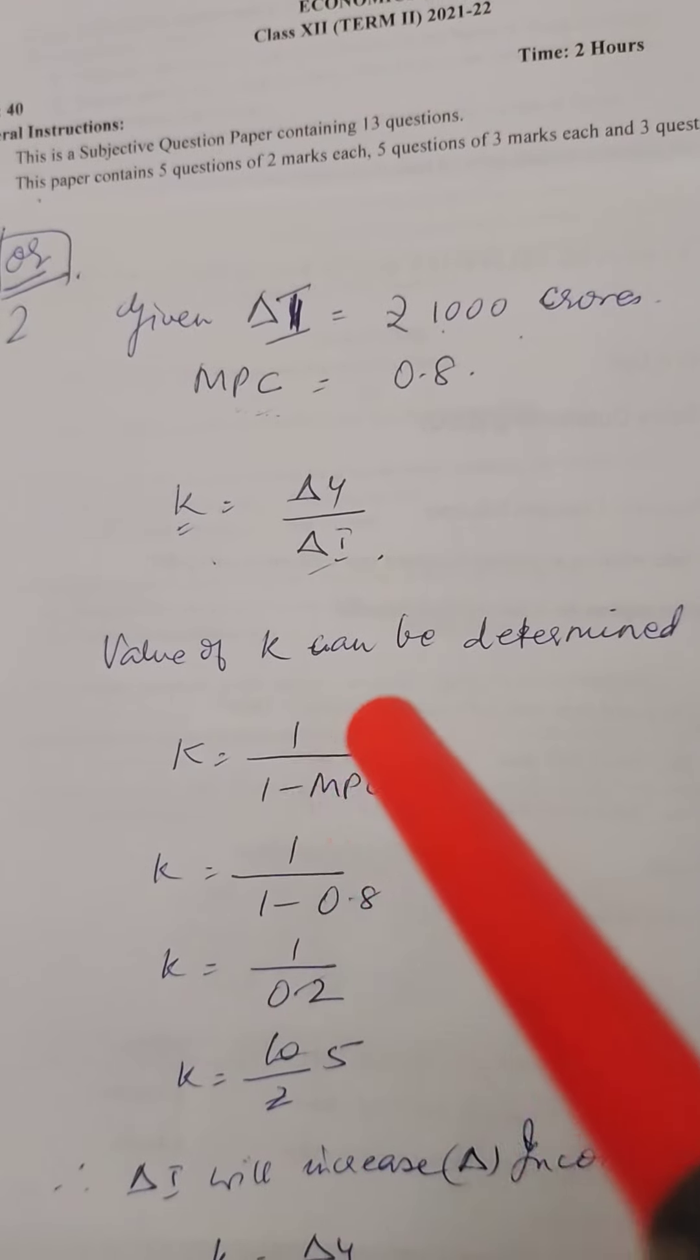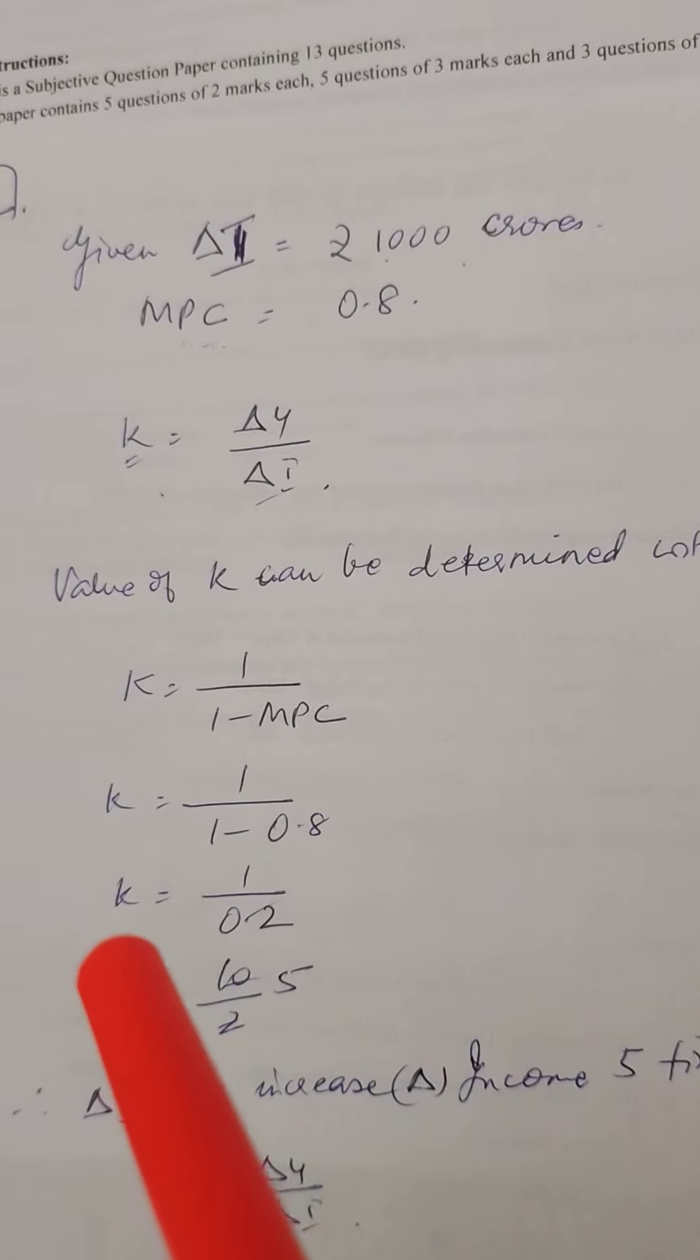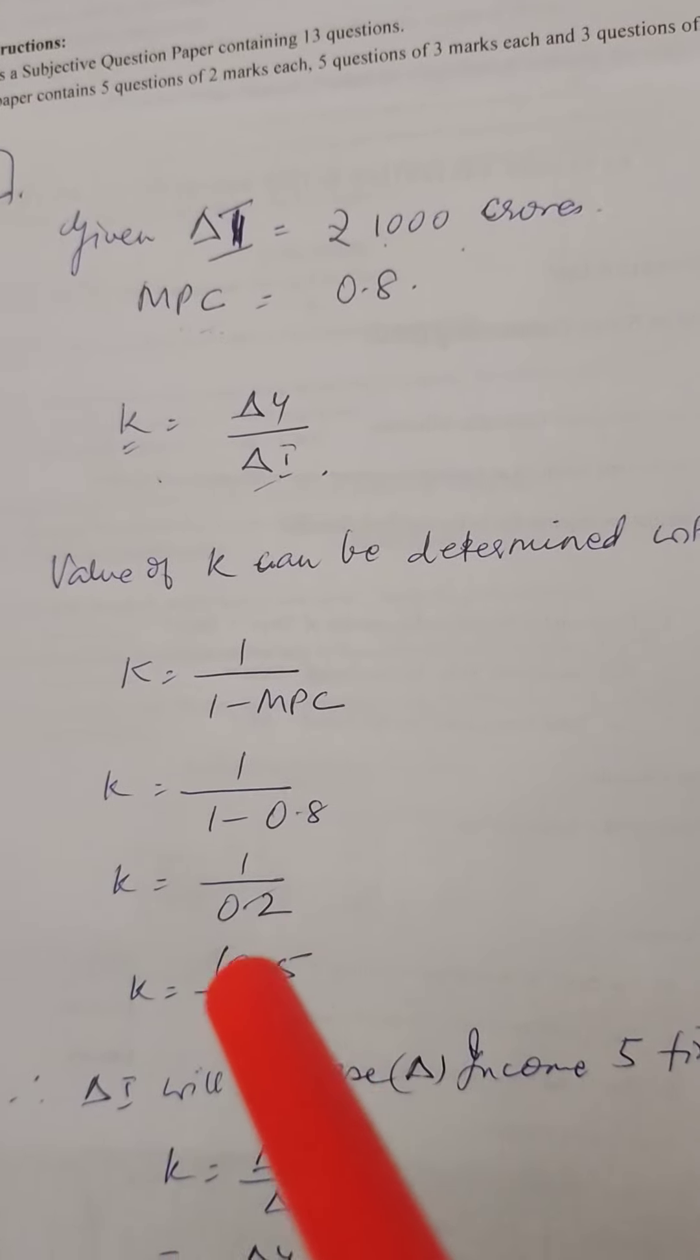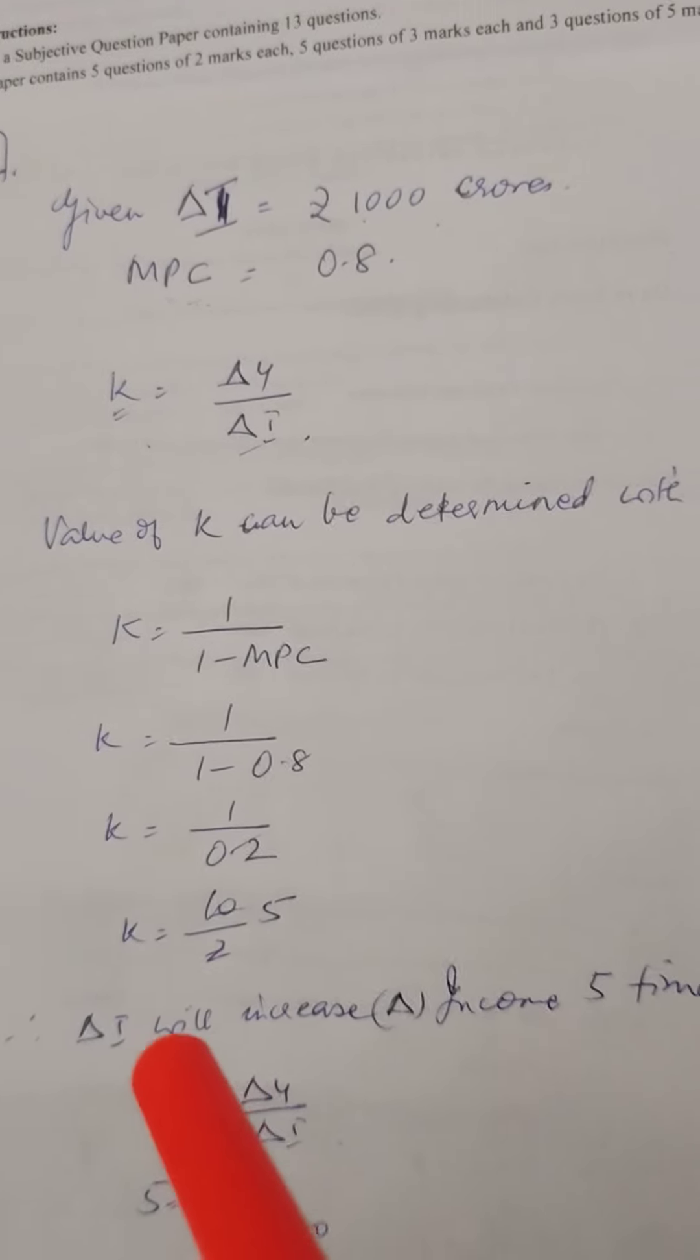So K = 1/(1 - MPC). K = 1/(1 - 0.8) = 1/0.2 = 5. So that's how you do it. 5 is the multiplier.